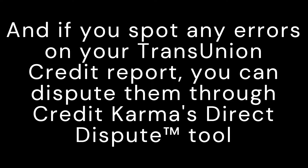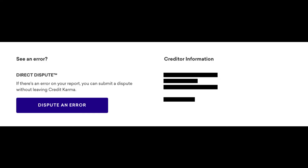you can dispute them through Credit Karma's Direct Dispute tool. All you have to do is scroll to the bottom of the account snapshot that contains the error in question. You will see a box labeled 'Dispute an Error.' Click on this box to launch the Direct Dispute feature, which looks like this on desktop.